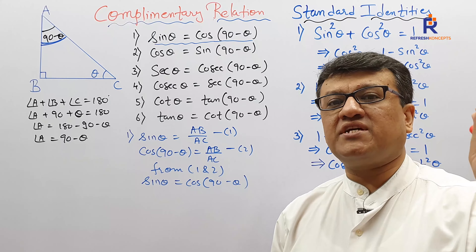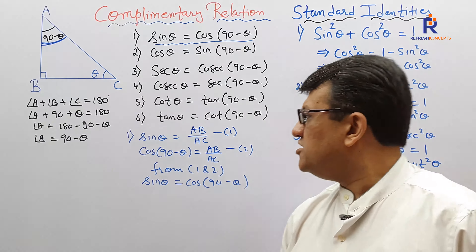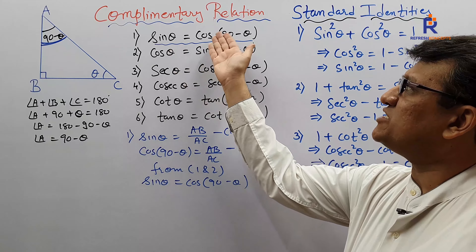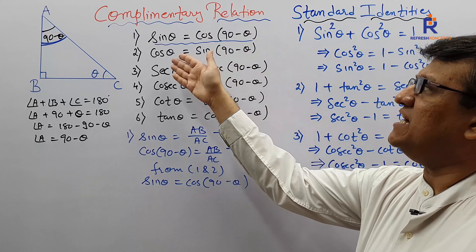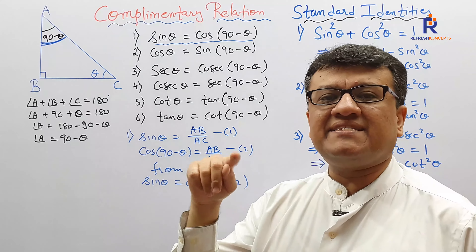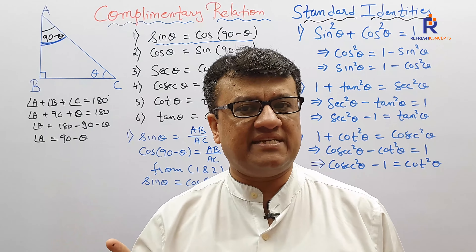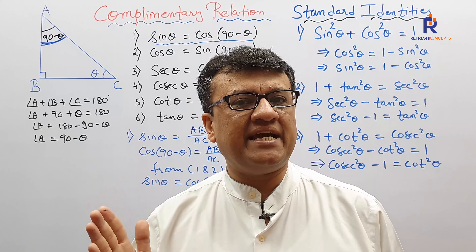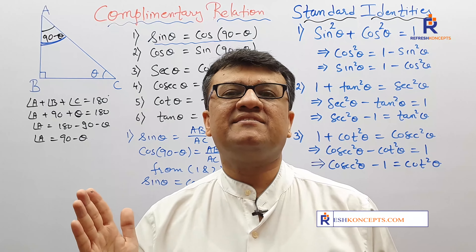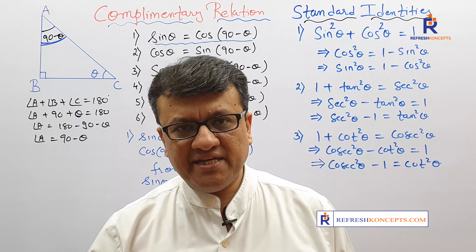These are nothing but complementary functions of sine, cos and tan. So: sine theta is cos(90 minus theta), cos theta is sin(90 minus theta), sec theta is cosec(90 minus theta), cosec theta is sec(90 minus theta), tan theta is cot(90 minus theta), cot theta is tan(90 minus theta).